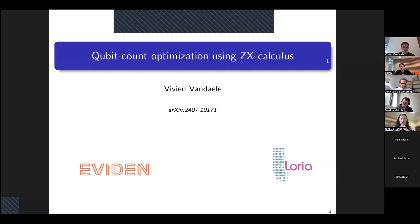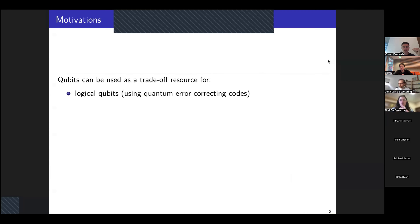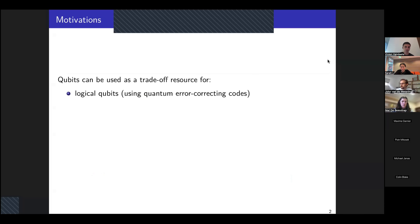All right. Thank you. So first I will start with some motivations about why we want to optimize the number of qubits. Qubits is one of the most fundamental resources in quantum computing. But what is also interesting about qubits is that they are a pivotal resource because they can be used as a trade-off for some other important resources.